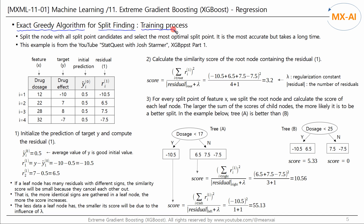Let's first look at the training process. Similar to the CART algorithm in decision trees, the exact greedy algorithm examines all split-point candidates and finds the best split points with great accuracy. However, if there is a lot of data, it will take a long time. Since GBM uses regular decision trees, it uses the gain calculated by the Gini index or entropy to find the best split points.